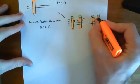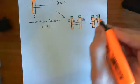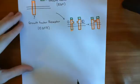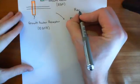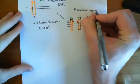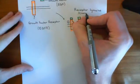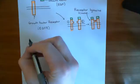Next, what's going to happen is autophosphorylation of the growth factor receptor dimer. Growth factor receptors can also be called receptor tyrosine kinases, because they have a tyrosine kinase enzyme within them. The tyrosine kinase enzyme is capable of putting a phosphate group onto a tyrosine amino acid. Let me remind you of the structure of the tyrosine amino acid.